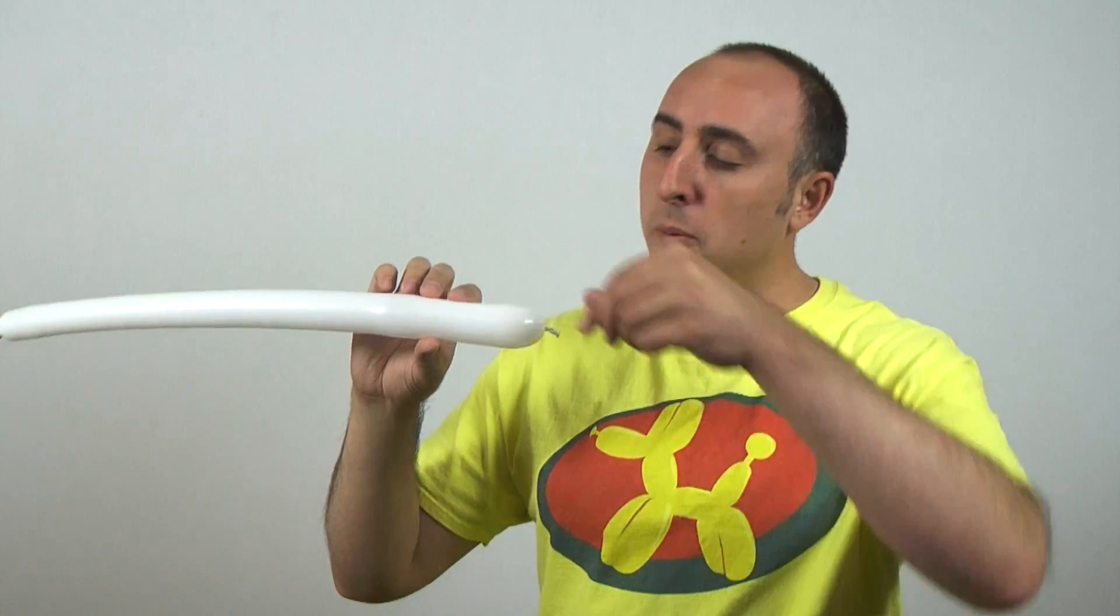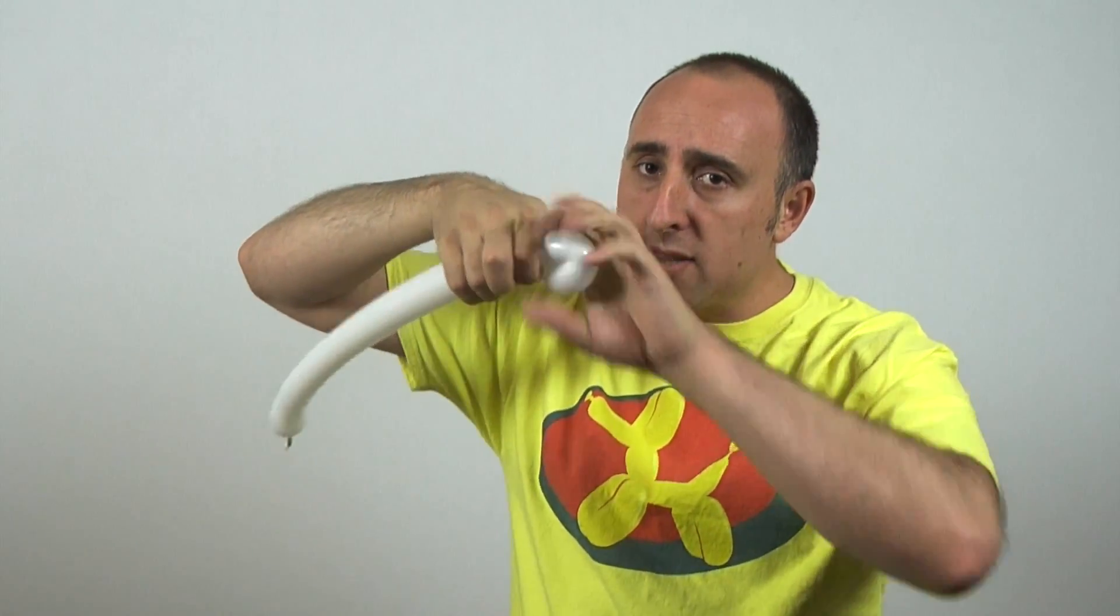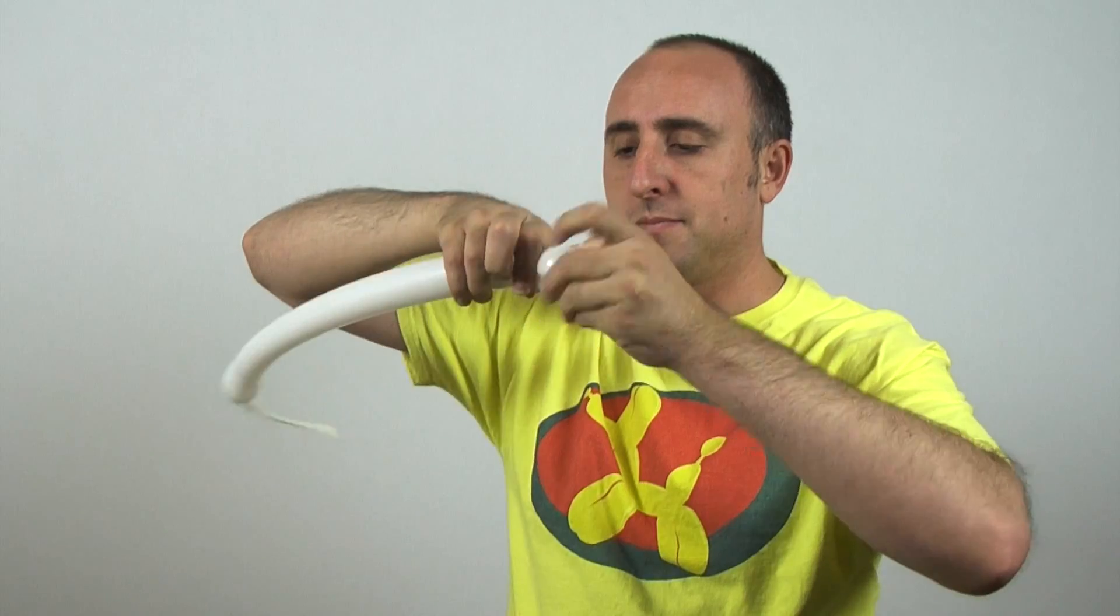The first thing we're going to make is a small flower petal. Fold the balloon over, hold onto the knot, squeeze the petal, and twist it. Make sure you hold onto that knot so it doesn't come undone.